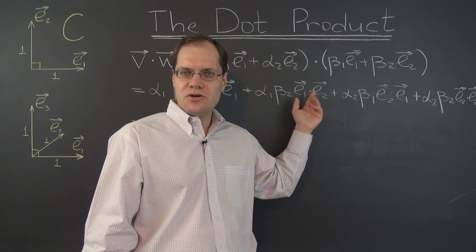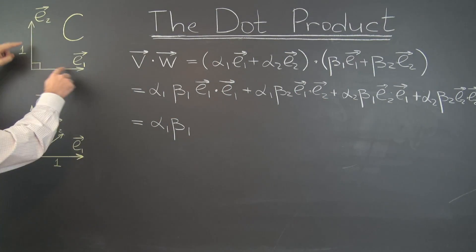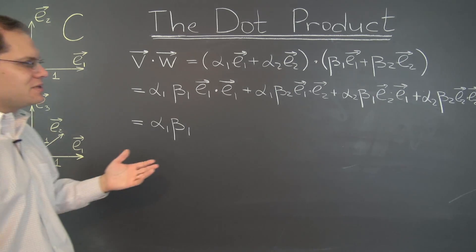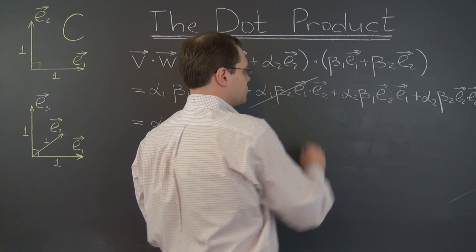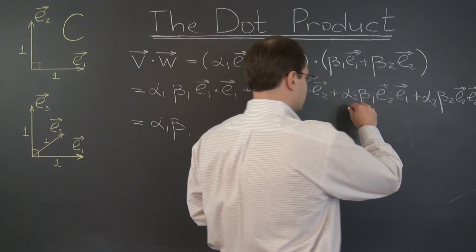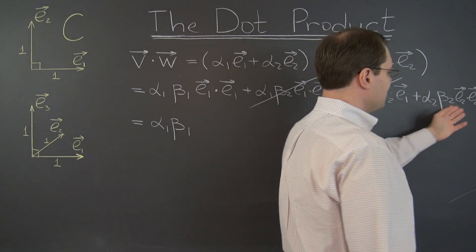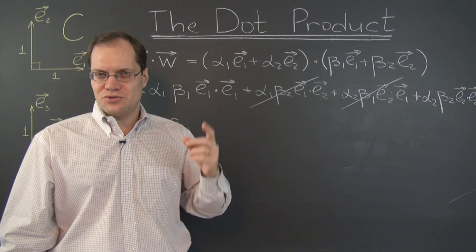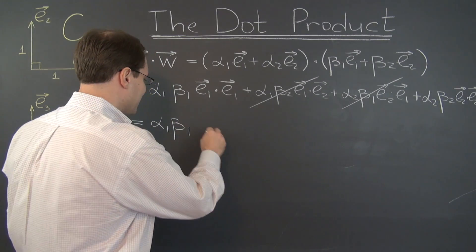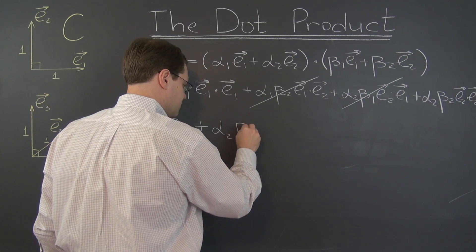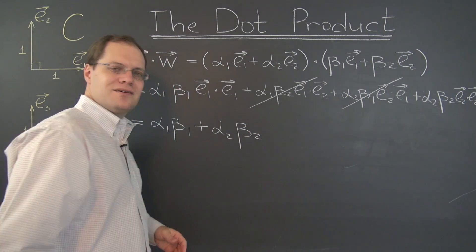What is E1 dotted with E2? Well, they're orthogonal. So when you use cosine, when you evaluate cosine of the angle between them, you'll get 0. So this term drops out. Similarly, this term drops out. And here we have E2 dotted with E2, which is, of course, length of E2 squared. That's 1. So we have plus alpha 2 beta 2. And the proof is complete.